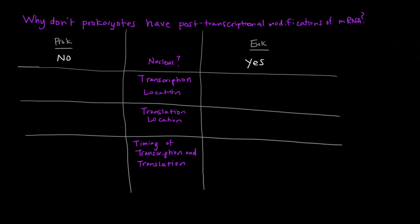Now, where does transcription occur in each of these types of cells? In prokaryotes, transcription occurs in the cytosol. And the reason why is because prokaryotes do not have any membrane-bound organelles. They don't have a nucleus. In eukaryotes, transcription does occur in the nucleus.